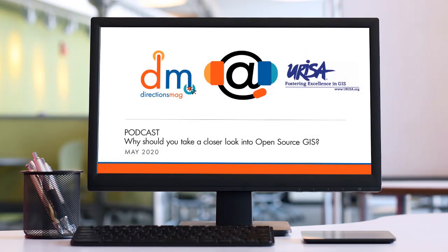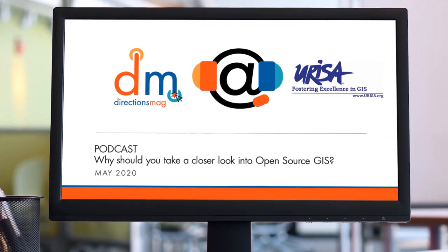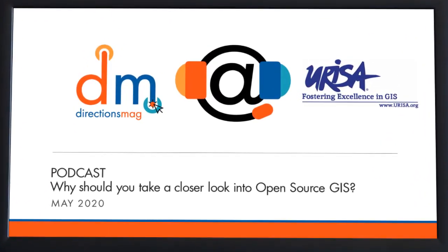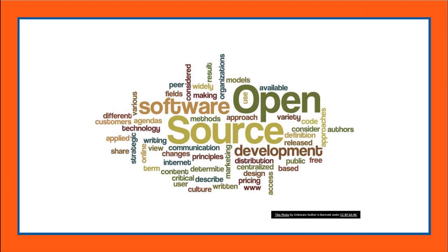Today we're going to be talking about open source GIS, and particularly why someone with zero experience or only a passing familiarity with open source GIS might want to take a closer look. Before we dive in, it's important to talk about what exactly open source means. In general, open source software is freely distributed and gives open and full access to the source code behind the application. There is some variation in how open source software is licensed, so it's super important to read the license agreements carefully when choosing software and tools for your work.